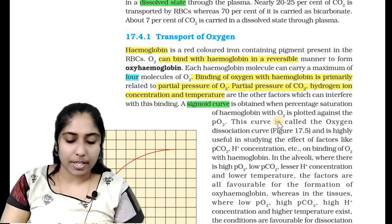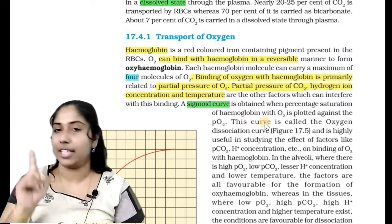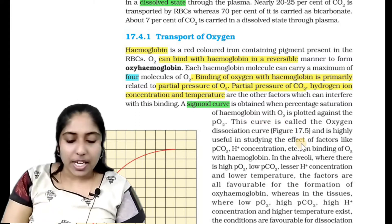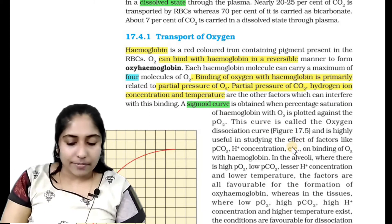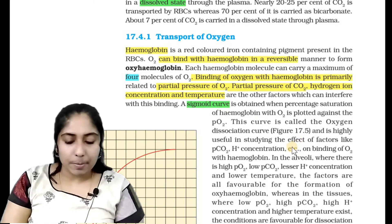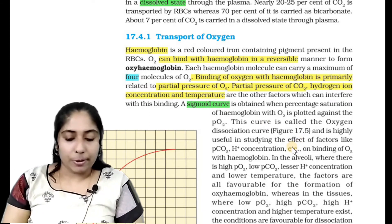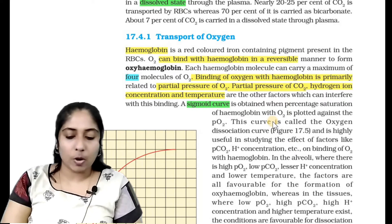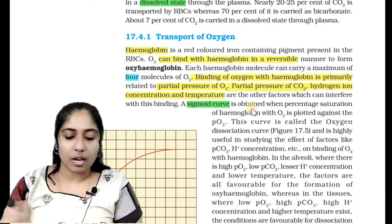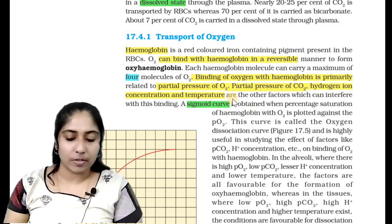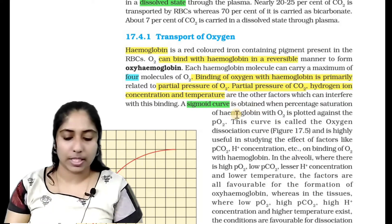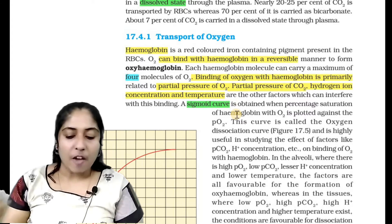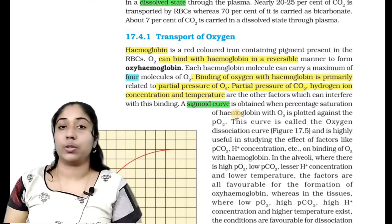In the alveoli, where there is high PO2, low PCO2, less H+ concentration, and lower temperature, the factors are all favorable for the formation of oxyhemoglobin.